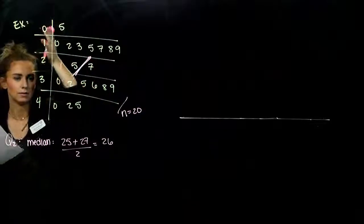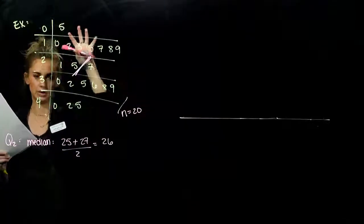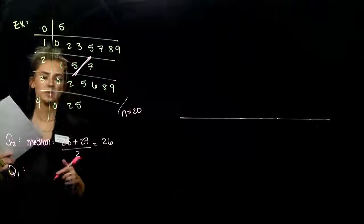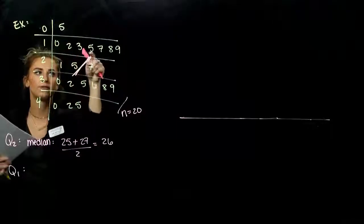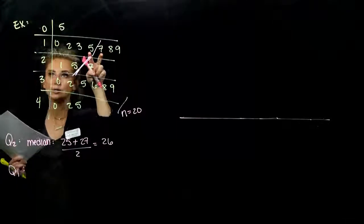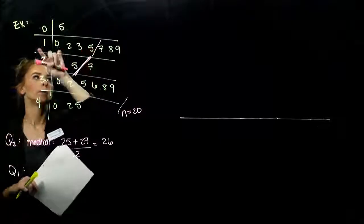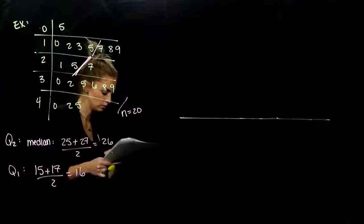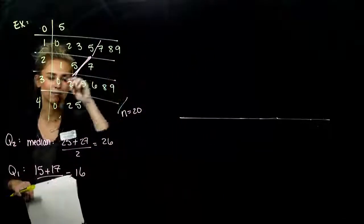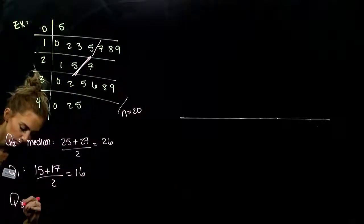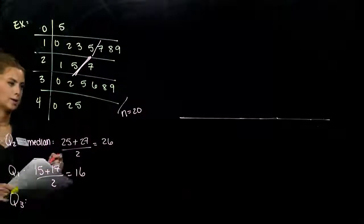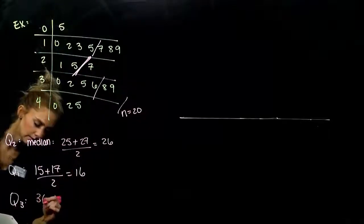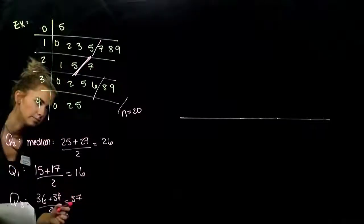For Q1, we're finding the median of the lower 10 data items, which is between the 5th and 6th items. The 5th item is 15 and the 6th is 17. The average of those two is 16, so Q1 equals 16. For Q3, the median of the upper 10 items: between the 5th and 6th of the upper portion. Those values are 36 and 38, and their average is 37. So Q3 equals 37.